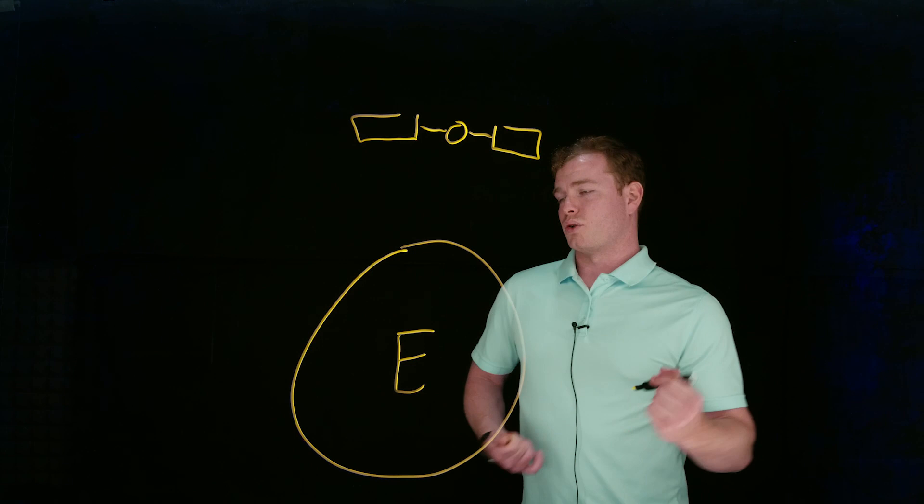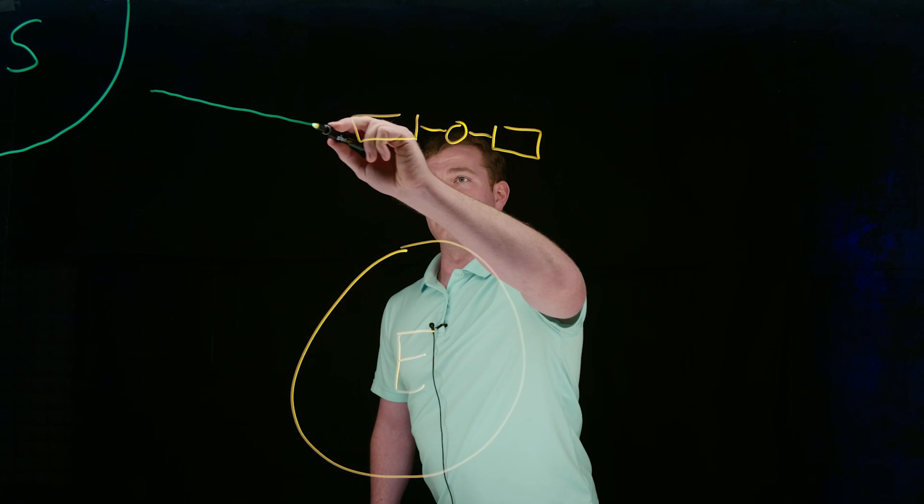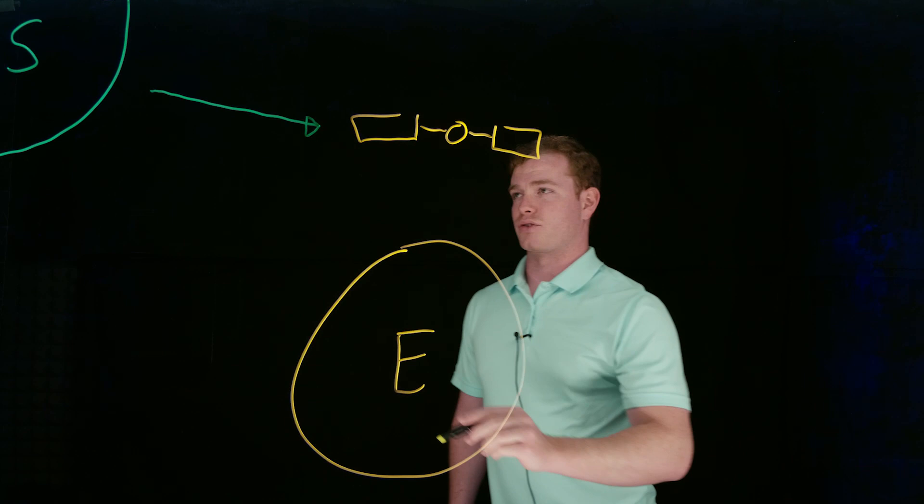We have the source of thermal radiation coming from a few different locations. First, we have our sun up here. The rays from the sun will directly impact our satellite, causing it to heat up.